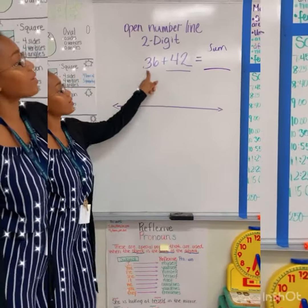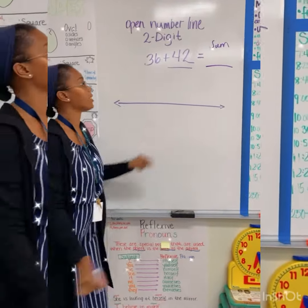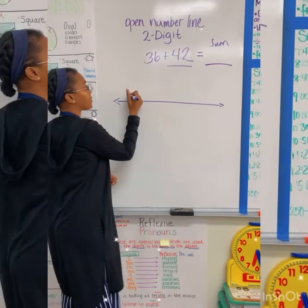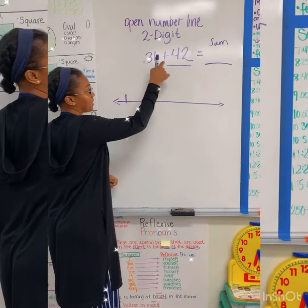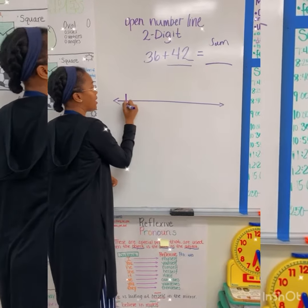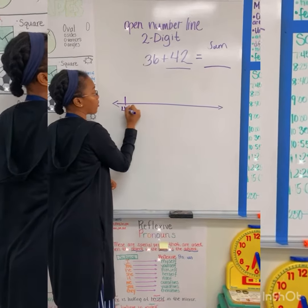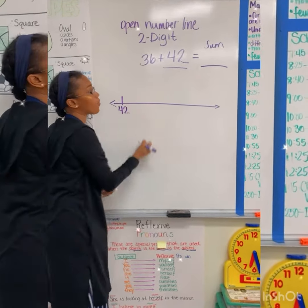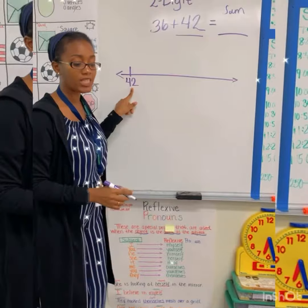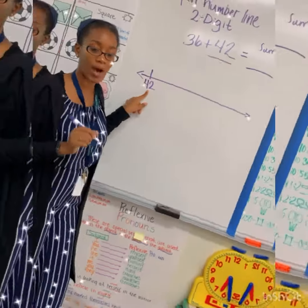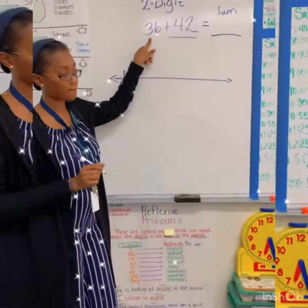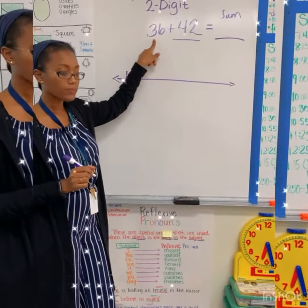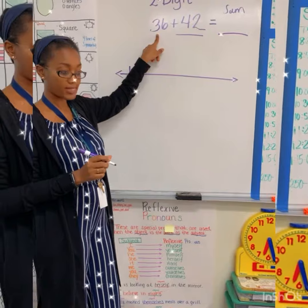So I have 36 plus 42. I'm going to start on this side because I'm adding, and I'm going to start with 42. How many spaces do I need to jump? 36!